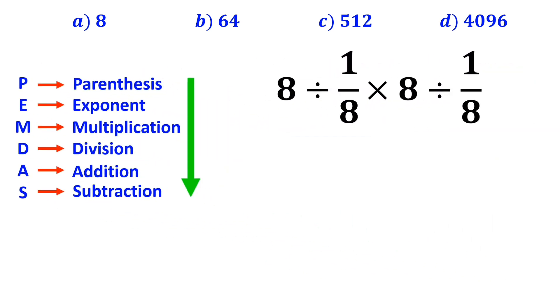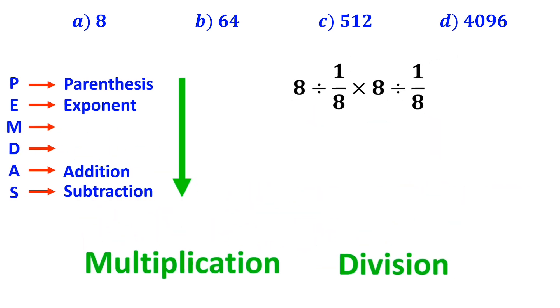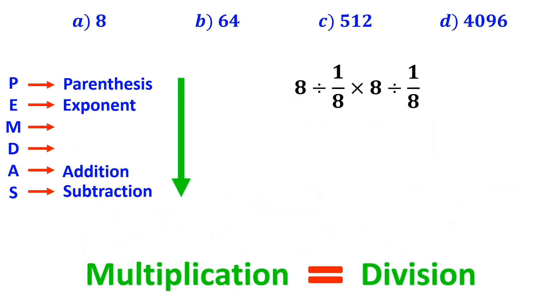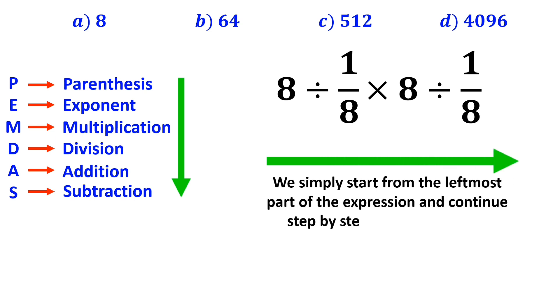As you can see in the image, we have two division signs and one multiplication sign. It's very important to remember that multiplication and division are on the same level of precedence. So, in this case, we simply start from the leftmost part of the expression and continue step by step toward the right. It means that we begin with the expression 8 divided by 1 over 8, which I have marked in yellow.